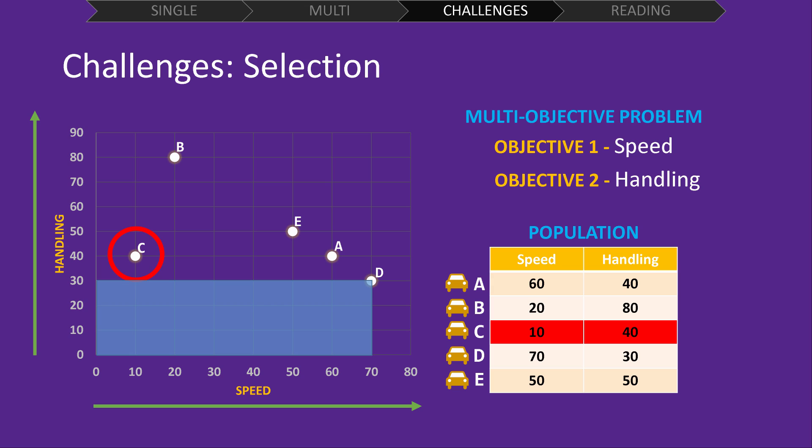Onto our final comparison, we can see solution D does not dominate solution C. But the same is true for the reverse. Solution C does not dominate solution D. We refer to these two solutions as being non-dominated, because solution C has better handling than solution D, and solution D has better speed than solution C.